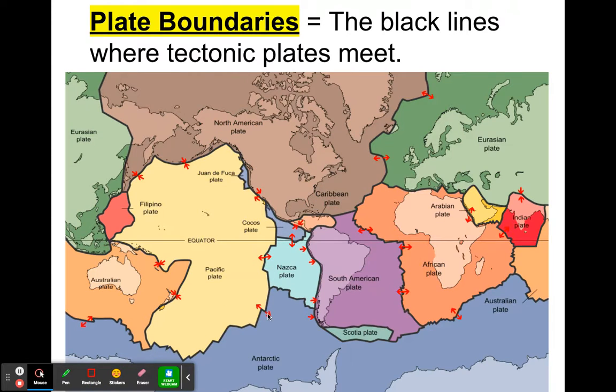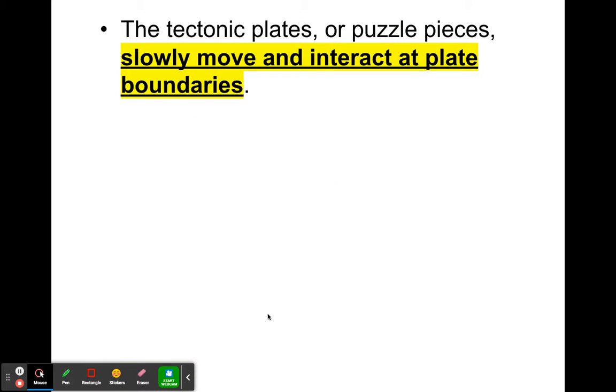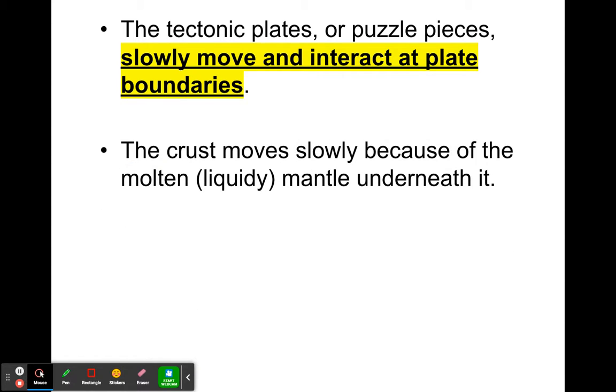So those are called the plate boundaries. Now, if I continue here, these tectonic plates or puzzle pieces, they interact at plate boundaries. So not only are they together, but there's things that happen there, which we'll talk about interactions, things that are occurring. And they actually move, the crust and the puzzle pieces, they move, because underneath our crust is the mantle. And the mantle is not rock like the crust. The mantle is more molten or liquidy. So it's moving around, which is causing the crust above it to also slowly move around. This is happening very slowly, but still it is moving.